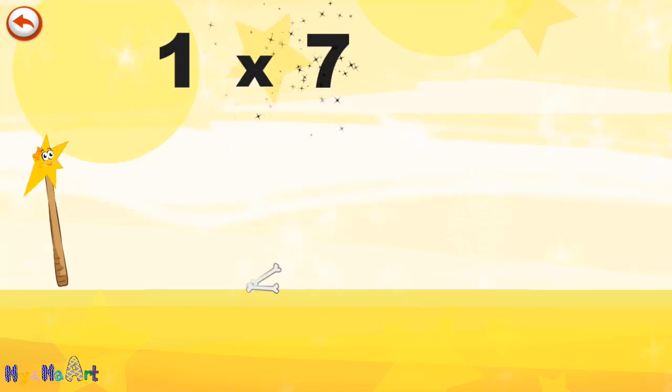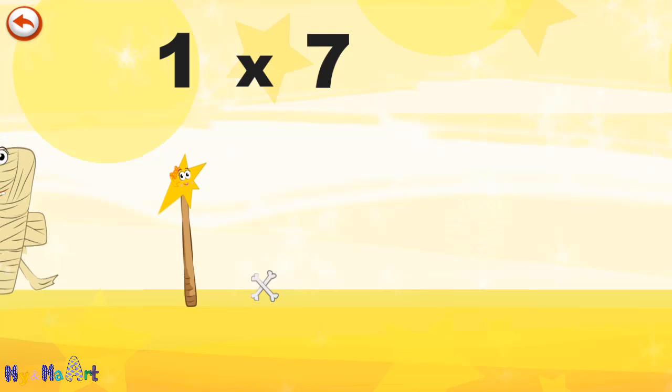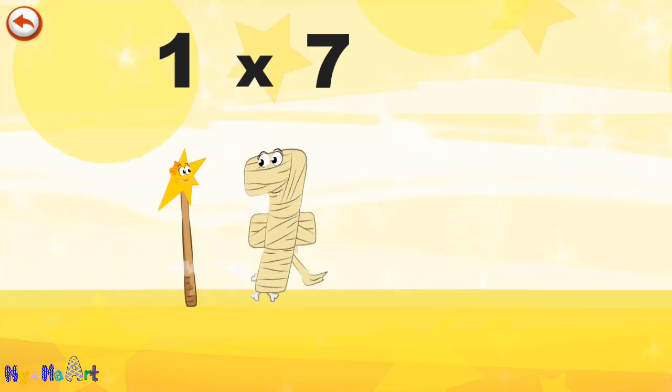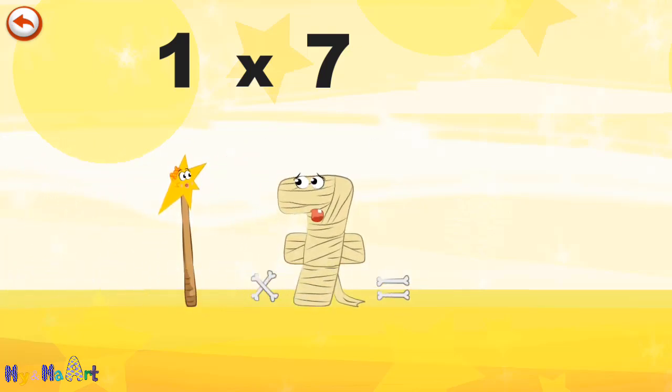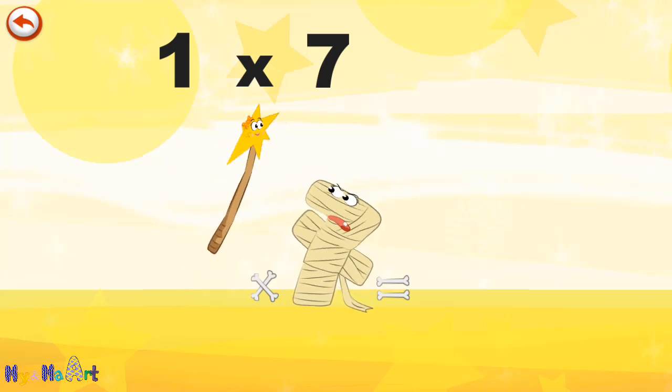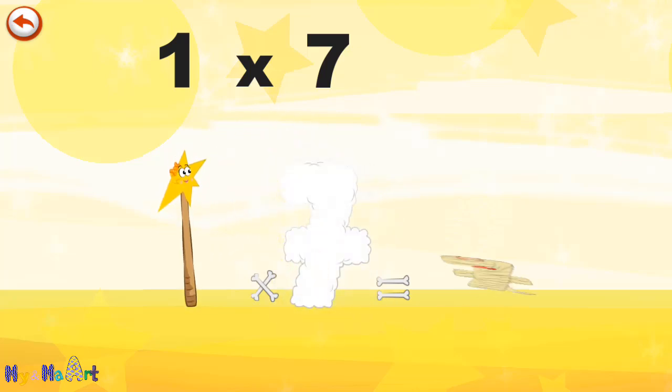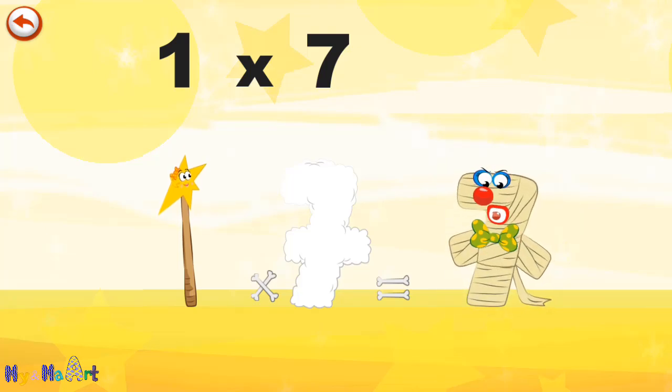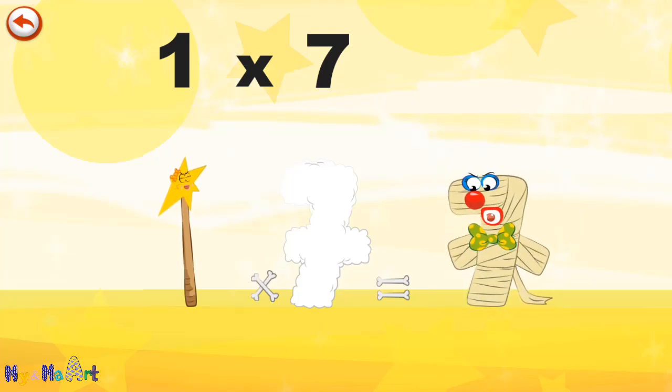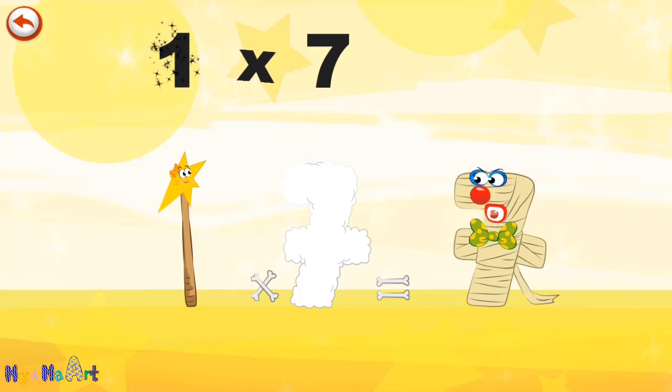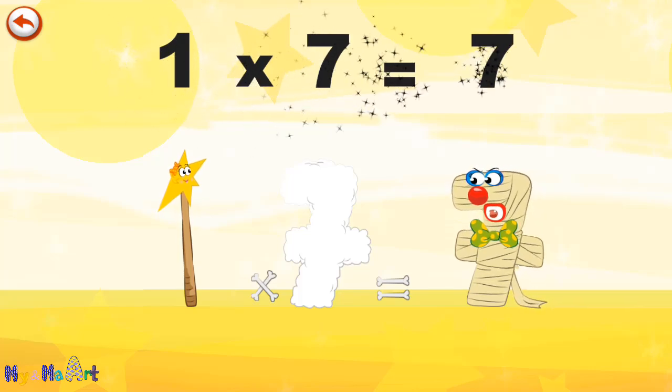What's the story of one times seven? Mrs. Wonder One can't help playing tricks on her friends. When she comes across Mrs. Ram seven, she casts a spell and changes her into Ram seven clown. One times seven is seven.